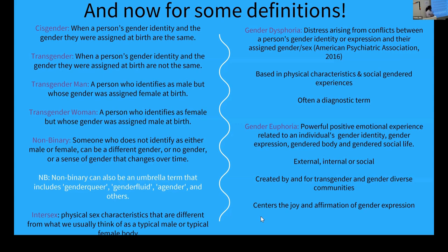It's important to note that intersex people can be cisgender or transgender. In the normative medical system, intersex people are often forcibly assigned a gender at birth — either based on their externally presenting genitalia, or they have surgery to correct it. So an intersex person assigned female at birth through corrective surgery could later transition to identifying as a man, or remain in their assigned identity.